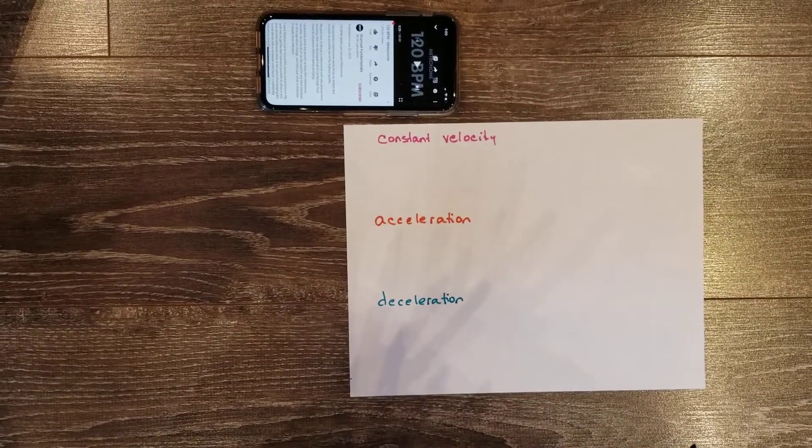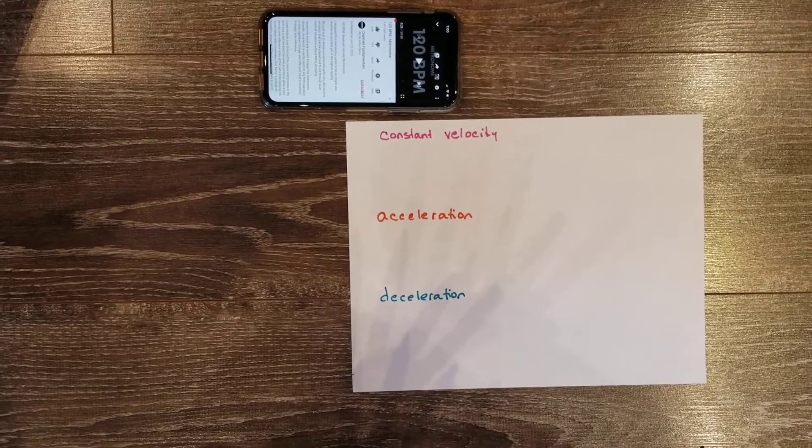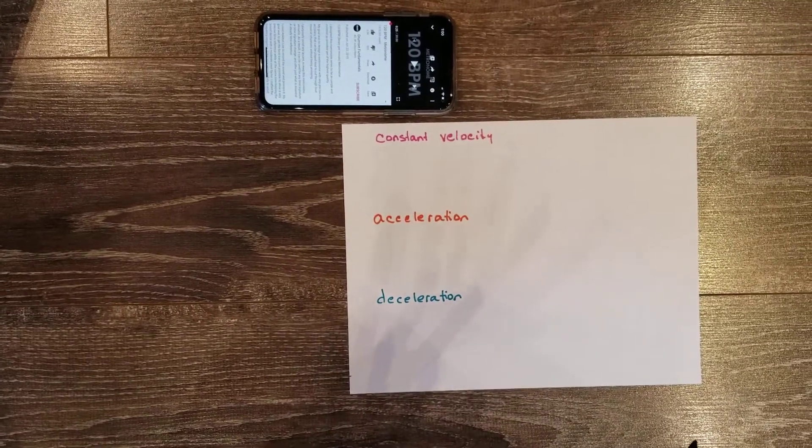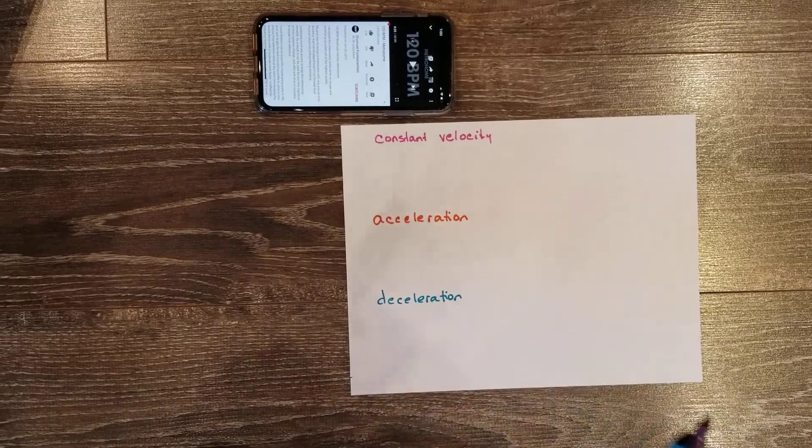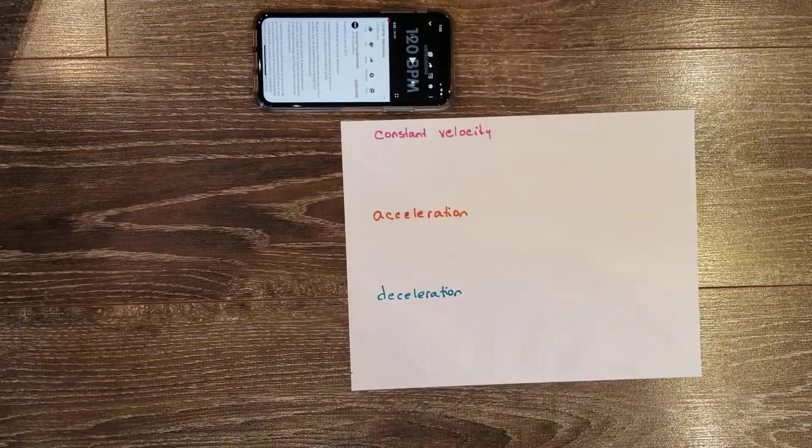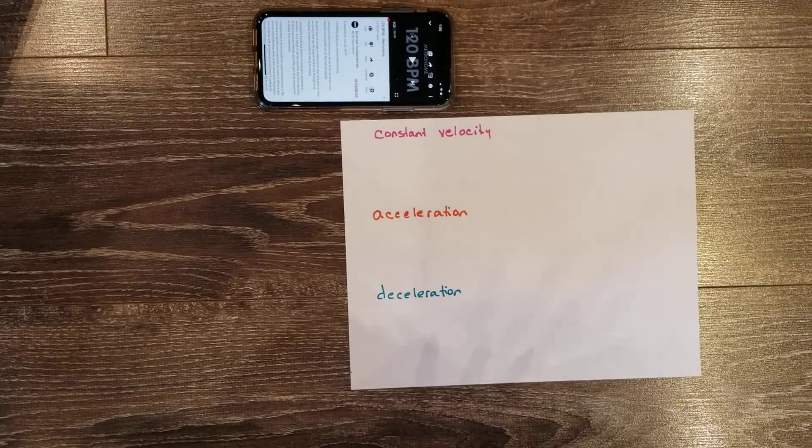Normally in class we would be doing a ticker tape lab. A ticker tape device is an interesting little machine that basically makes a dot on a strip of paper, and it makes 60 dots every second.